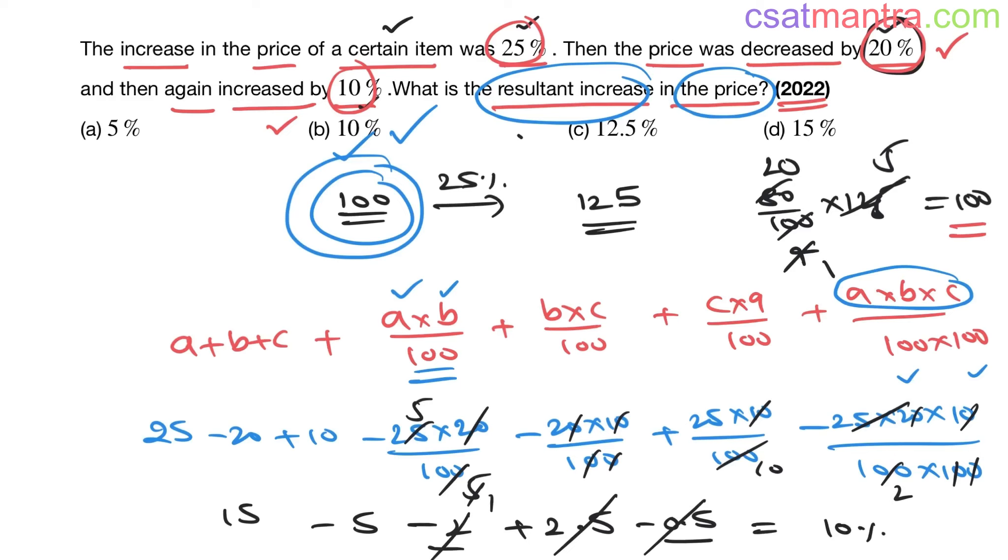10 percentage increase, because it's positive. Having known this method, know when to apply, when not to. Problem becomes simpler this way. Assume the price of that item as 100, because everything is in percentages.